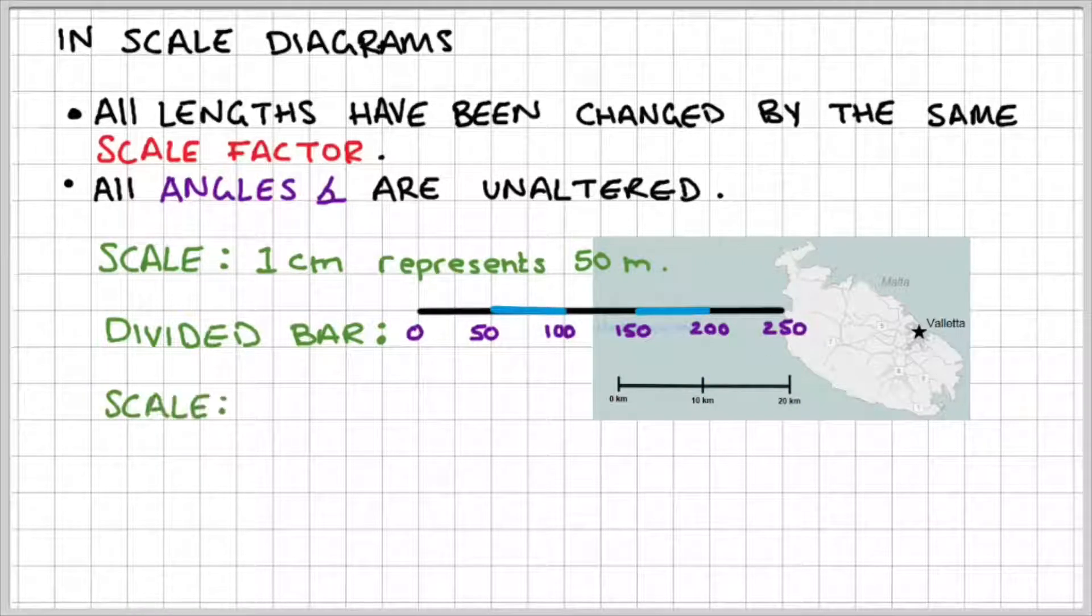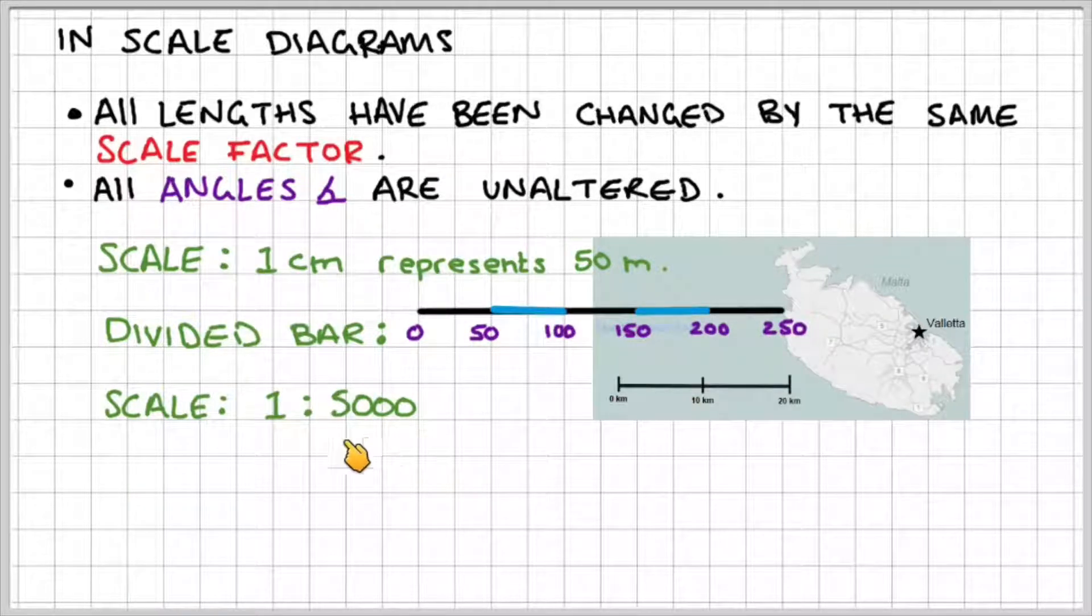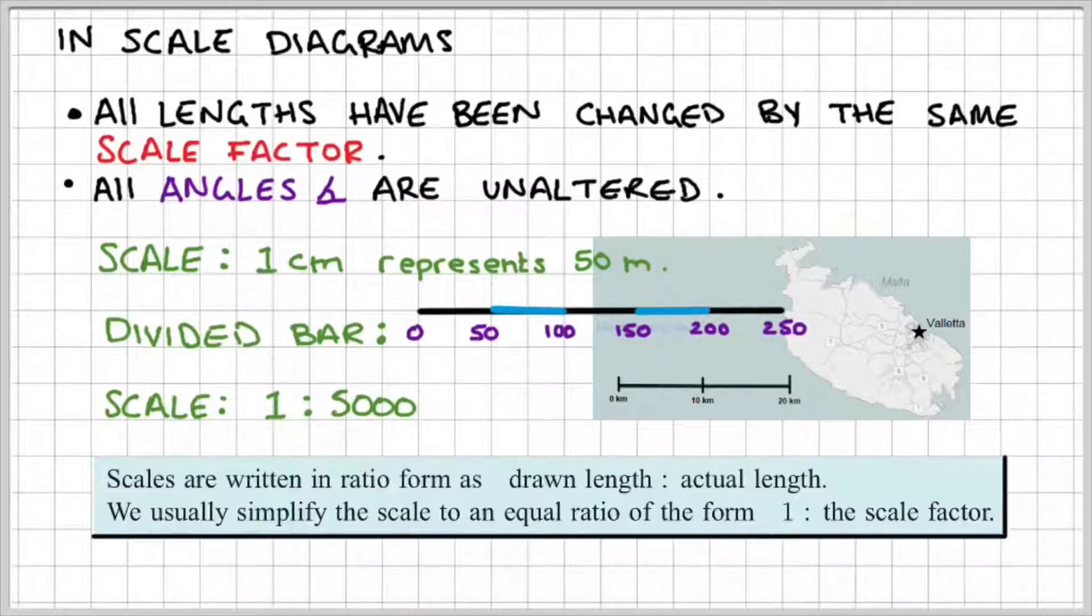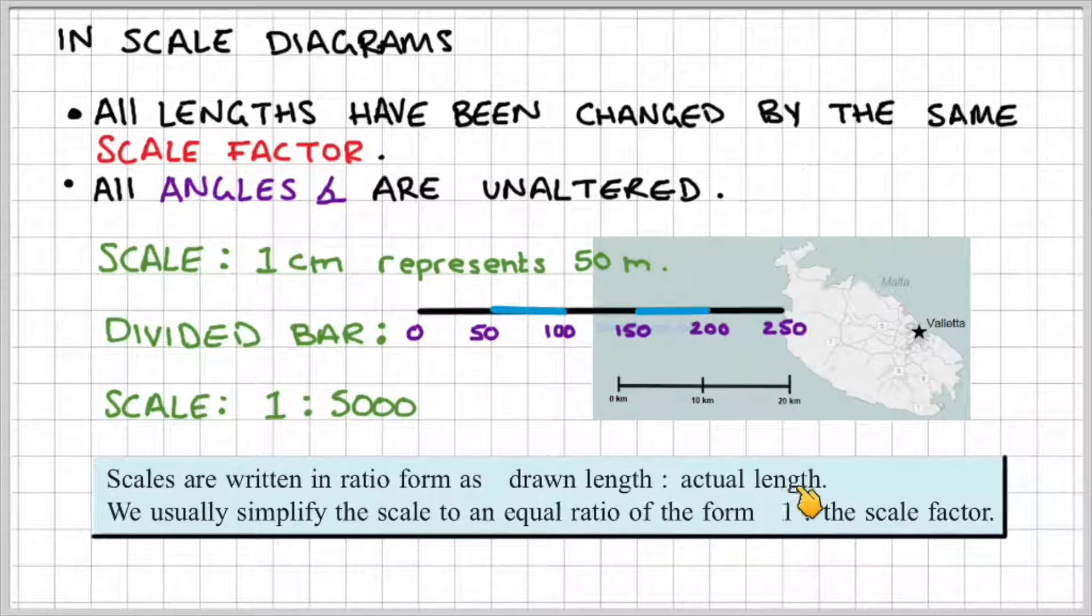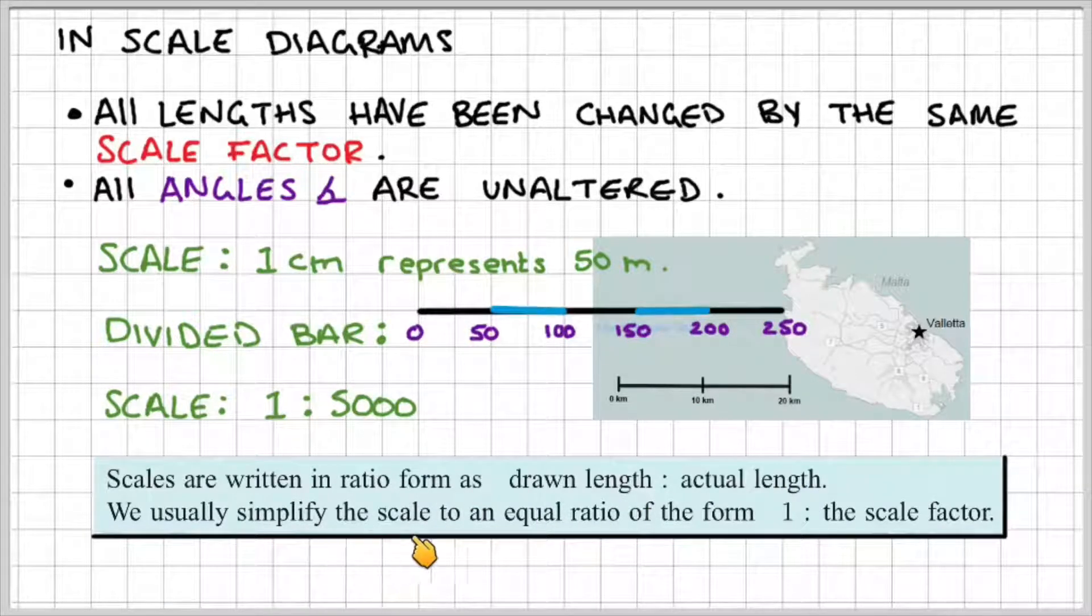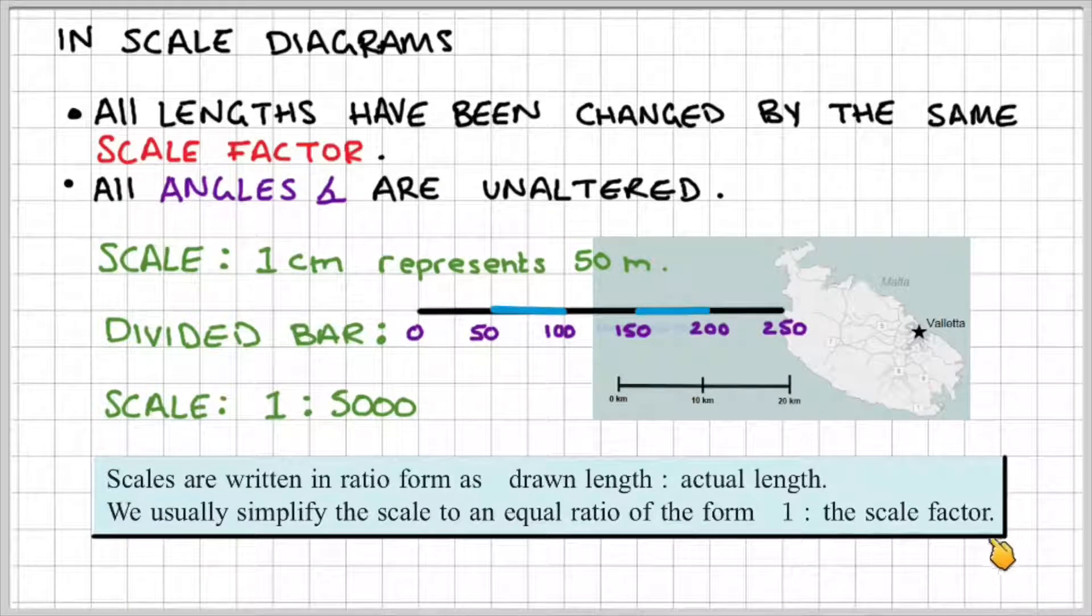A third way which is more common is they'll give you a ratio, so one to five thousand. One centimeter in a drawing would represent five thousand centimeters in real life. Scales are written in ratio form as drawn length to actual length. We usually simplify the scale to an equal ratio of the form one to the scale factor. So stick around we'll do an example of these.